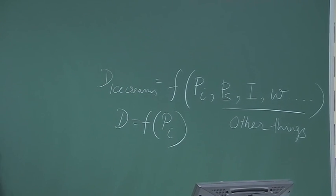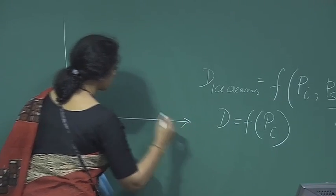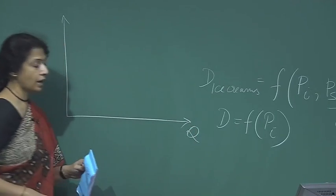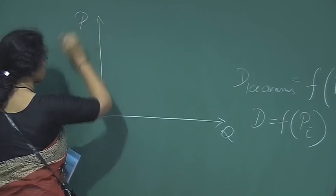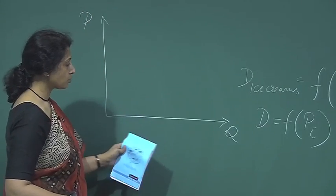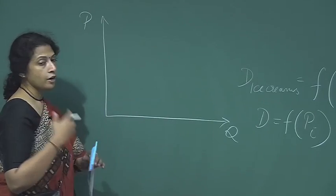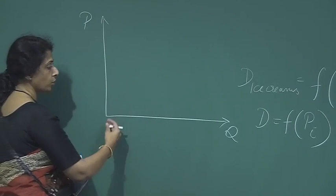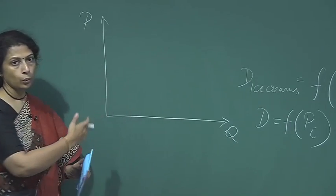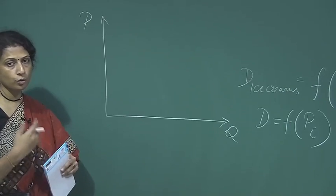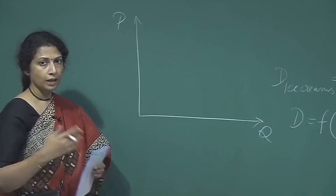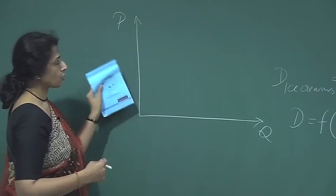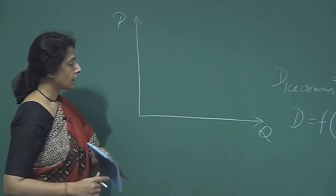What I am looking for is the relationship between the quantity of ice cream I would like to buy and the price of ice cream. We will always stick to the framework where quantity is on the x-axis and price is on the y-axis. This is something we will uniformly use throughout the entire course — price always on the y-axis and quantity on the x-axis.